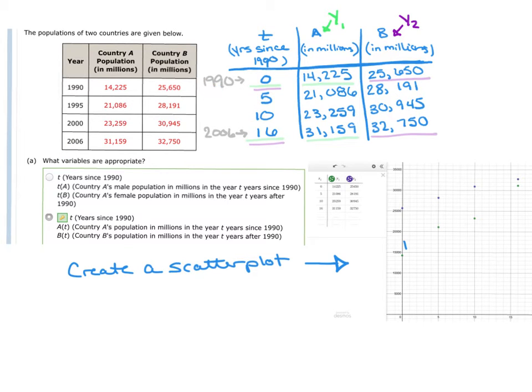So 1990 minus 1990 is 0, 1995 minus 1990 is 5, 2000 minus 1990 is 10, and 2006 minus 1990 is 16. These values are not going to change; they are the same as they were in the table over here.